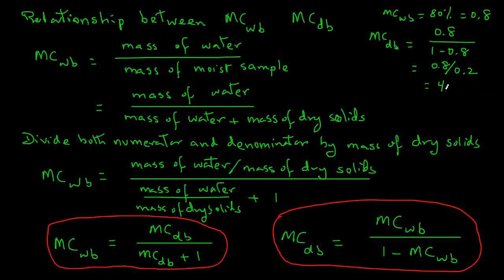Remember, this is a fraction. So moisture content dry basis is 4 times 100, or 400%. Sometimes it looks kind of odd that the moisture content is more than 100%, but note that this is dry basis. The dry basis values can be above 100%, whereas the wet basis moisture content is always between 0 and 100.